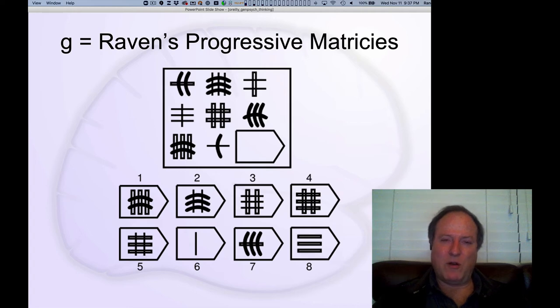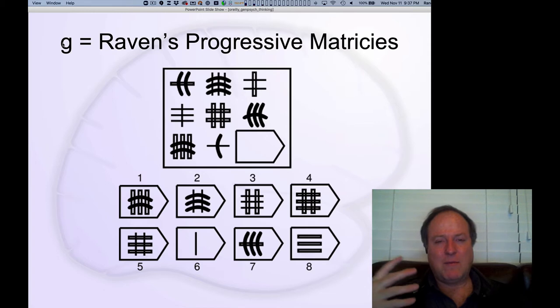Well, one of the most important components of the overall IQ test is this thing called the Raven's Progressive Matrices Test. And this is actually the name of the person who came up with it. It is the best single test measure of this construct of G, this generalized fluid intelligence, this component that's shared across many different tasks.